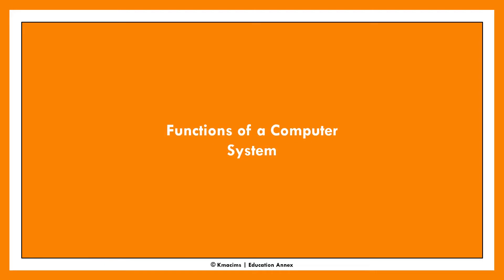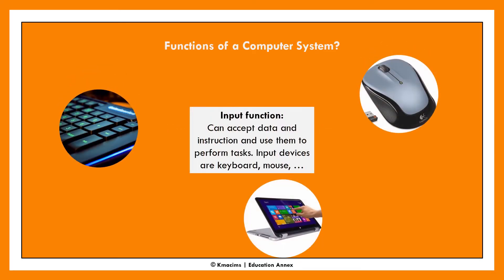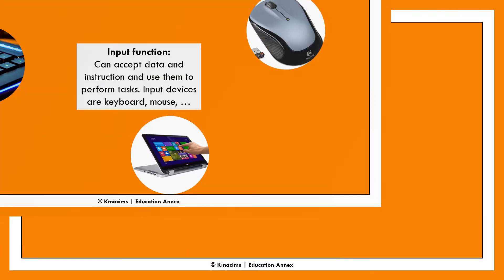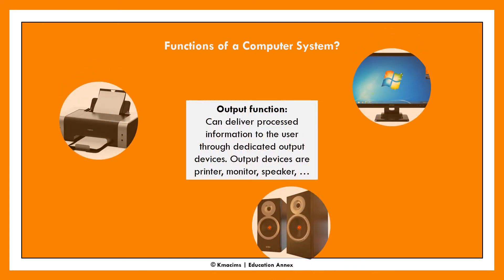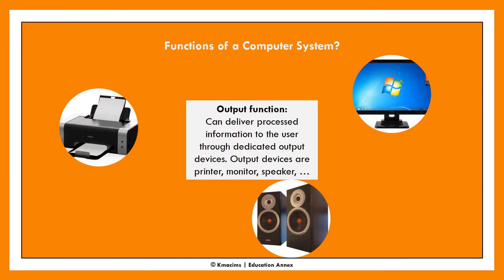Based on predefined instructions, a computer can perform five basic functions. The first is the input function. An input function allows the computer to accept data and instructions and use them to perform its basic tasks. Examples include the keyboard, the scanner, the mouse, etc. For the output function, a computer can deliver processed information to the user through dedicated output devices such as the printer, the speaker, and the monitor.